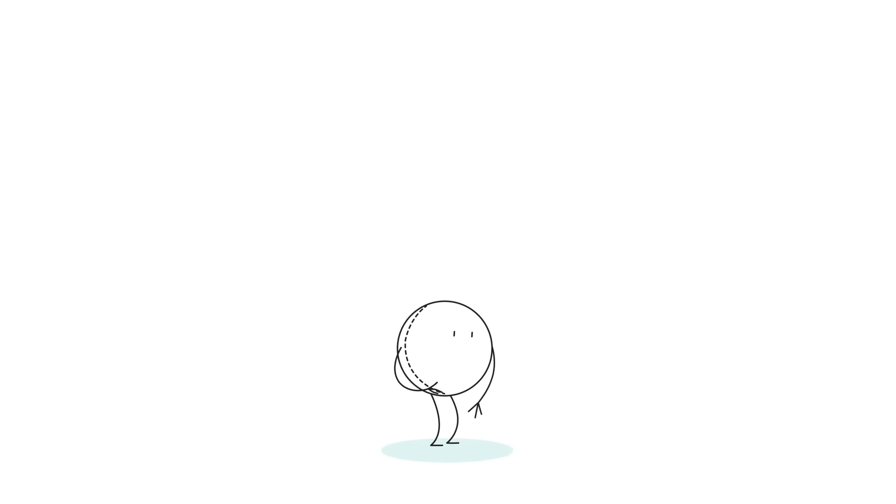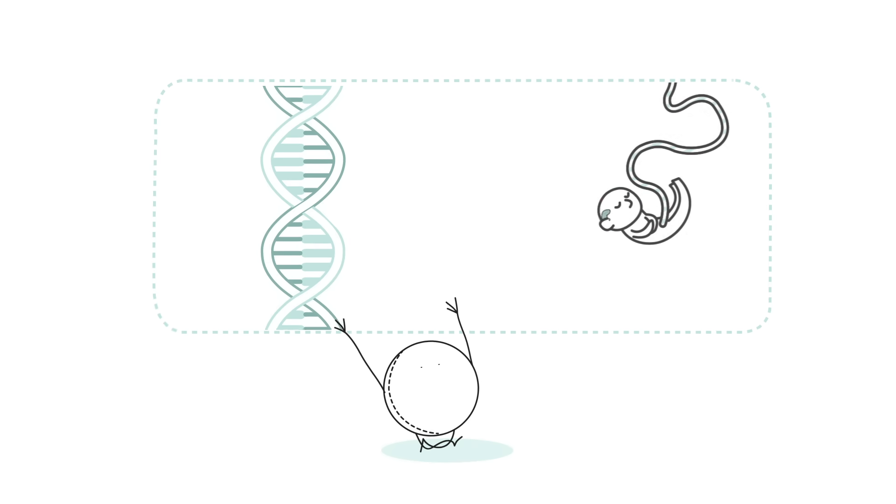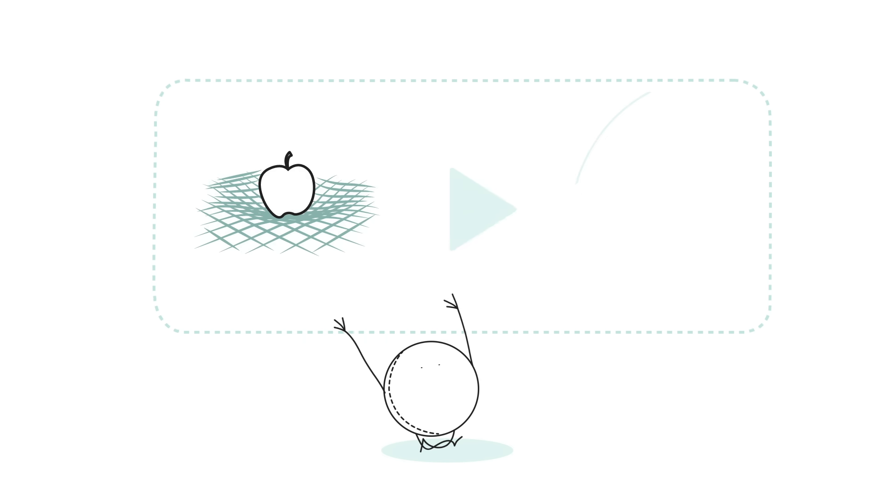A theory might invoke dominant and recessive genes to explain how brown-haired parents ended up with a redheaded child, or use gravity to shed light on the parabolic trajectory of a baseball.